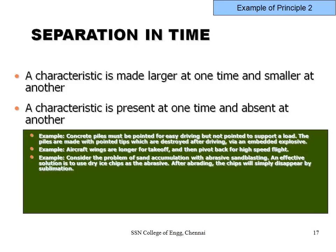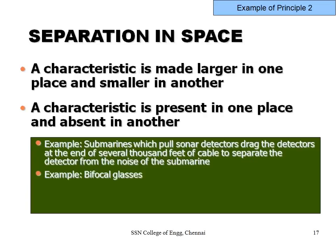Examples of Principle 2: a concrete pile must be pointed for easy driving but not pointed to support a load — so the tip can be sharp during driving and flat afterward. An aircraft wing can be longer for takeoff and pivoted back for high-speed flight. For sandblasting with interior cavities, use dry ice instead of sand — dry ice particles blast as effectively as sand, then evaporate afterward. This is separation in time.